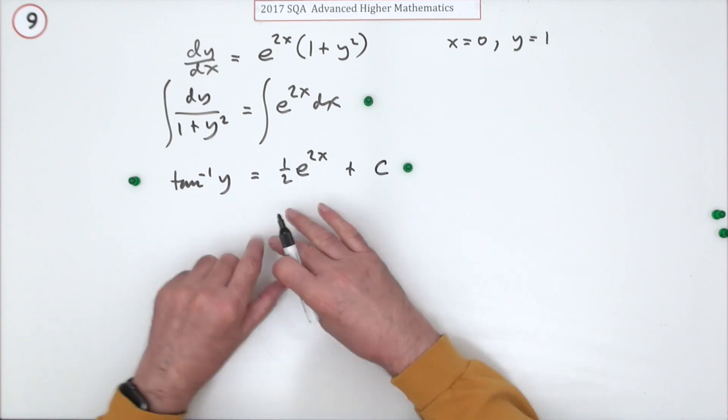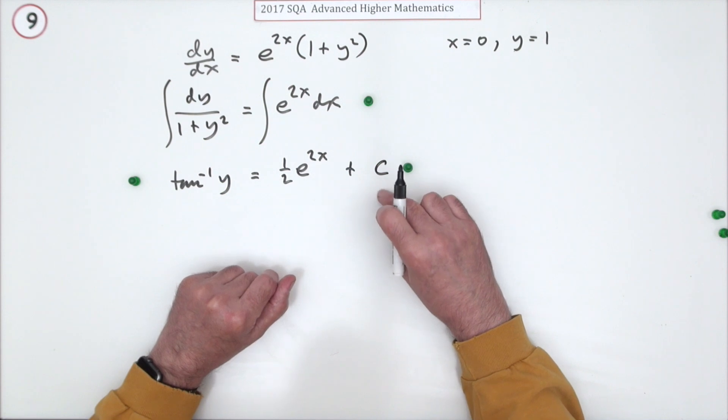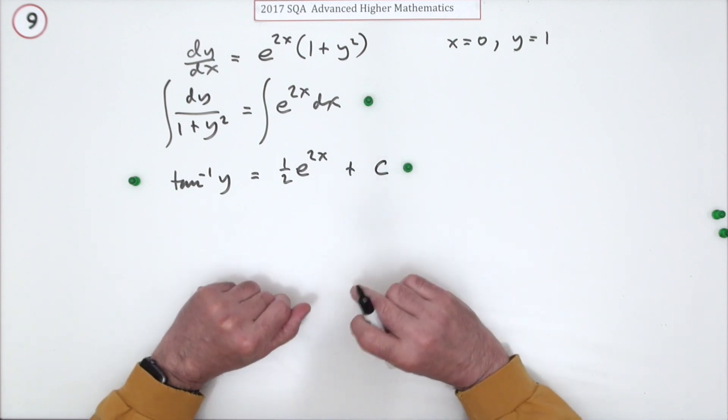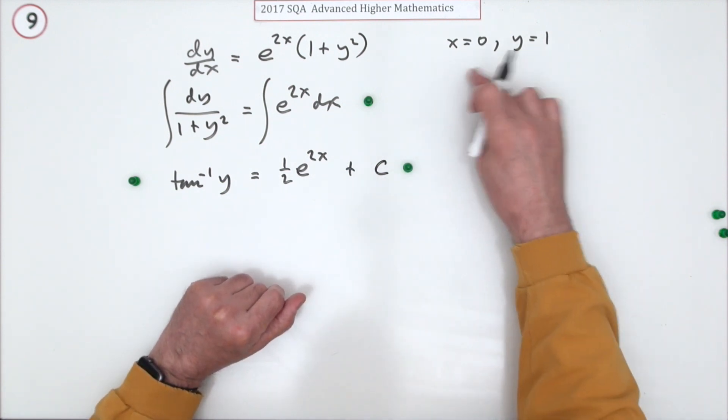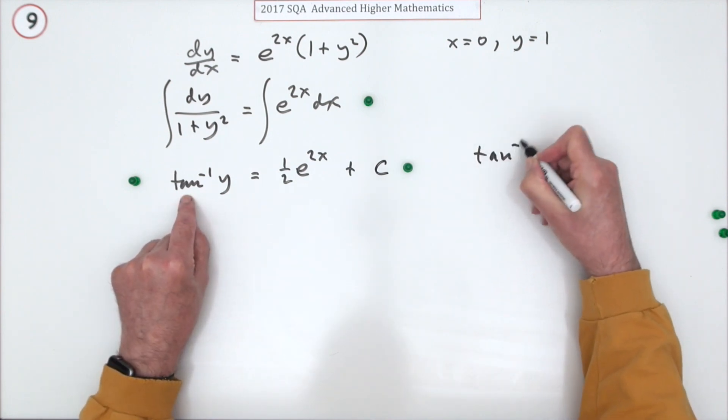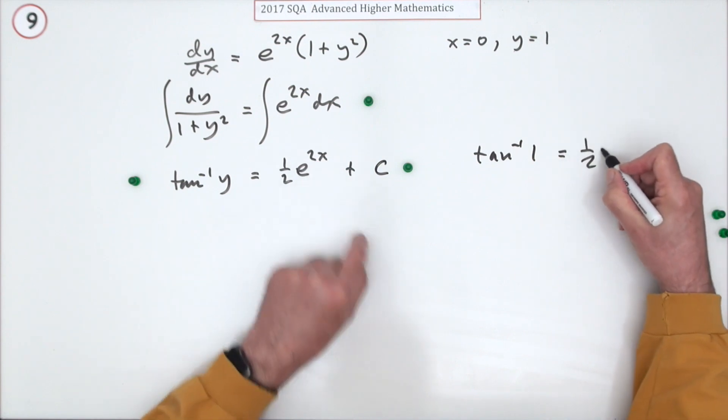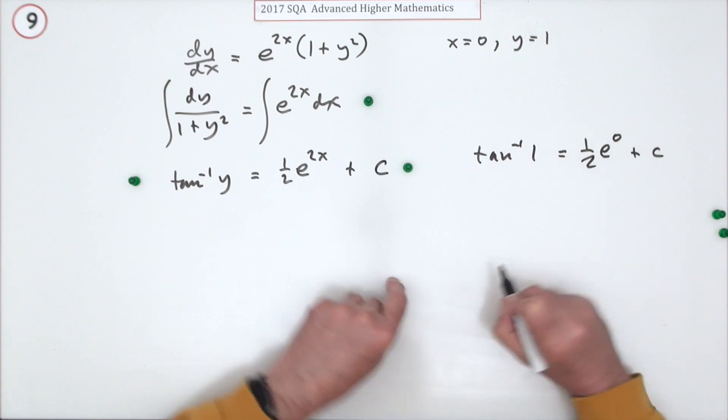Now you could tidy up and gather the c along with it. But you're better off working out the c as soon as it rears its head. It's usually simpler that way. So I'll pop in my initial conditions. Inverse tan of y, that'll be inverse tan of 1. A half of e to the 2x, that's a half of e to the 0. Plus c.